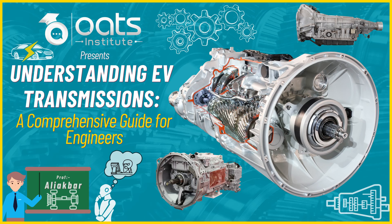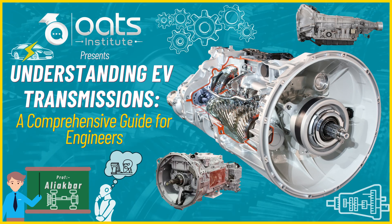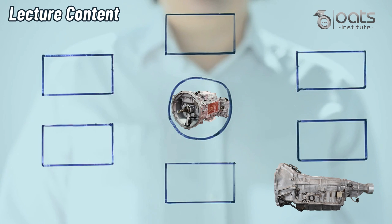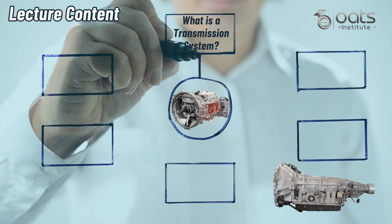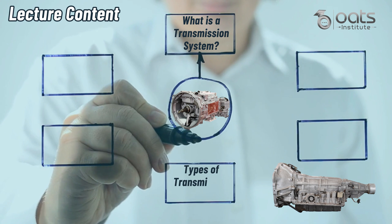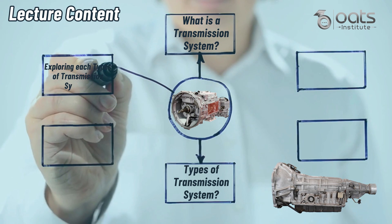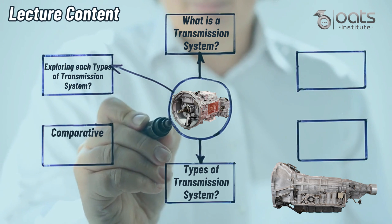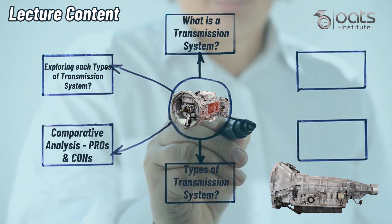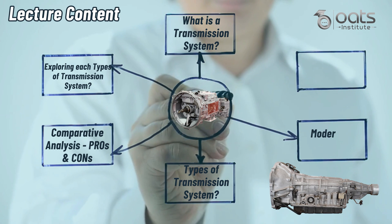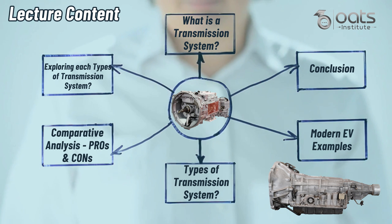Before we begin, let's take a structured approach to understand the content we will be discussing during this lecture. First, we will begin with the foundational knowledge of what a transmission system involves. Following that, we will uncover the various types of transmission systems used in modern electric vehicles. Next, we will explore each type in detail. Then, we will conduct a comparative analysis shedding light on the advantages and disadvantages of these systems. Finally, we will highlight some modern electric vehicles that have harnessed these transmission systems to enhance their performance and efficiency.